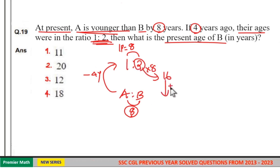Now after 4 years, that is presently, B's age is equal to 20. So option 2 is your answer.